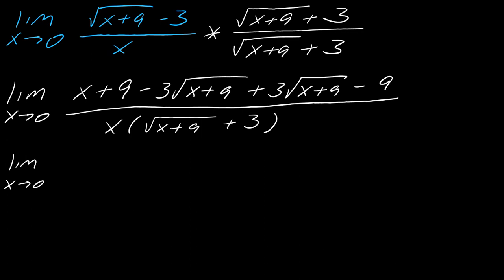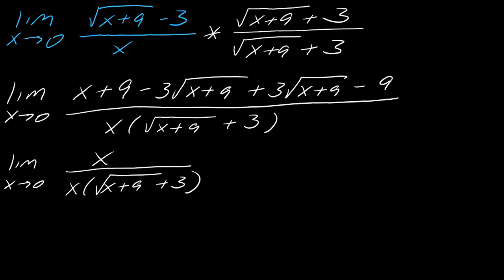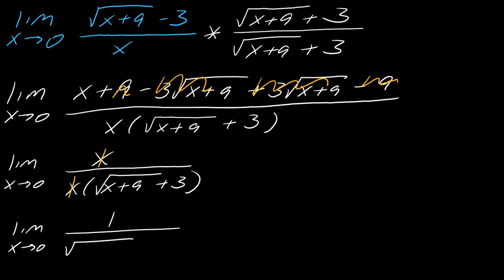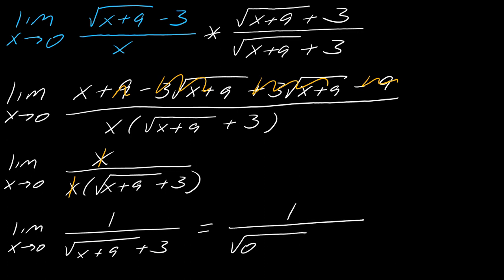After simplifying, I get x over x times the quantity (square root of (x plus 9) plus 3). The x's cancel, leaving the limit as x approaches 0 of 1 over the square root of (x plus 9) plus 3. Now I have a 1 on top and a polynomial under the radical — no reason I can't plug in 0. Plugging in 0 no longer gives 0 over 0, and the limit ultimately comes out to 1 over 6.